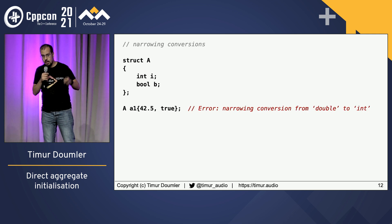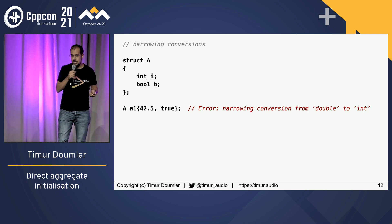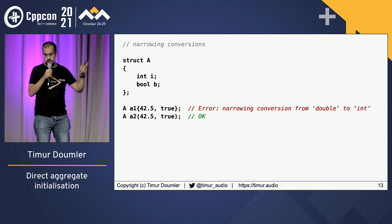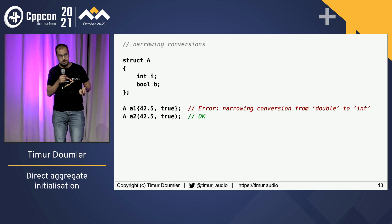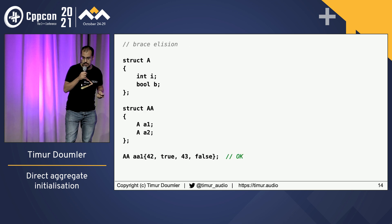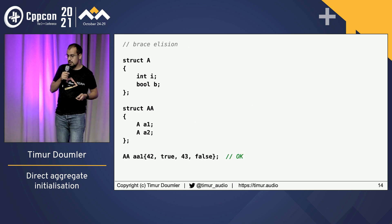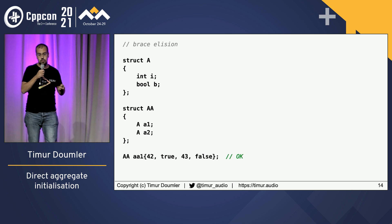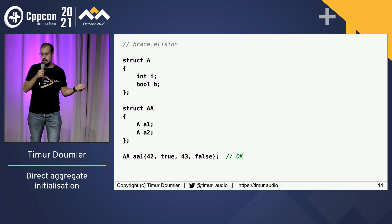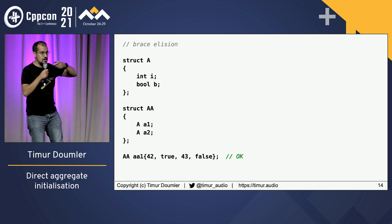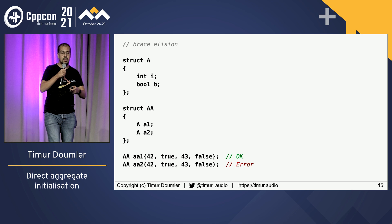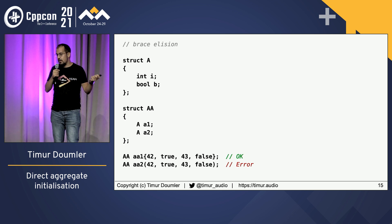For example, list initialization does not allow narrowing conversions. Direct initialization does, so this works with parens but not with curlies. On the other hand, if you have brace elision — like you have a nested aggregate, an aggregate inside an aggregate — if you do curlies, you get brace elision, so you can write out flat initializers and it will recurse into the sub-aggregates. But with parens, that doesn't work. That's very unfortunate.